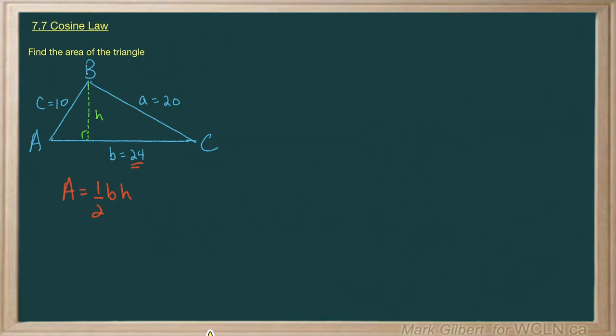Let's find angle C. And to do that, we're going to need the cosine law. Use the cosine law to find angle C. The cosine law says c squared equals a squared plus b squared minus 2ab cosine C. Let's plug in what we know.